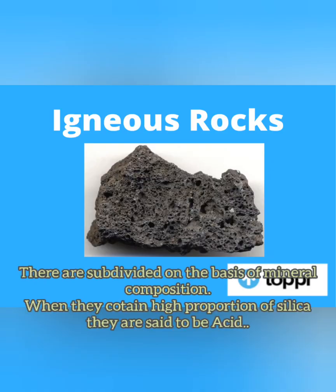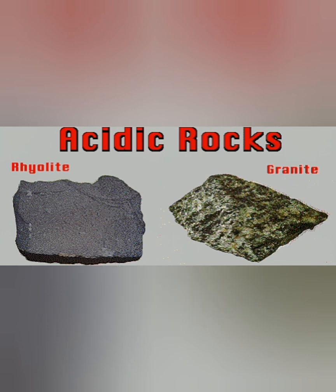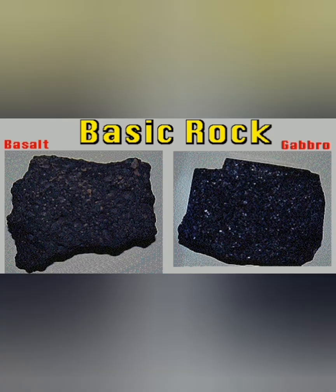Based on their composition, igneous rocks can further be divided into two groups. Igneous rocks which contain large amounts of silica are called acidic, like granite, which is very less dense and lighter. Basic igneous rocks are more dense and have a greater proportion of basic oxides like iron, aluminium, and magnesium, and they are very dense and dark in color.